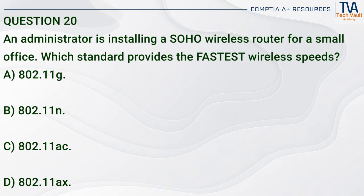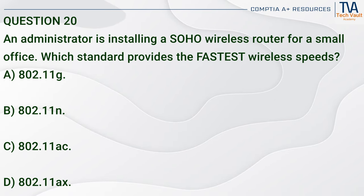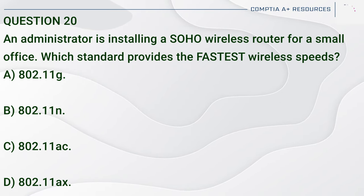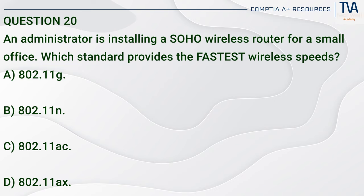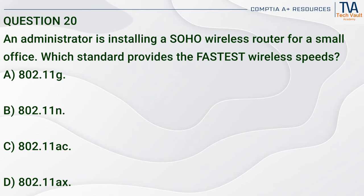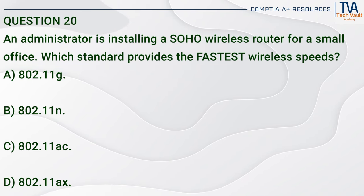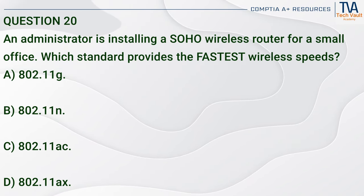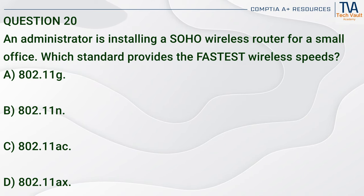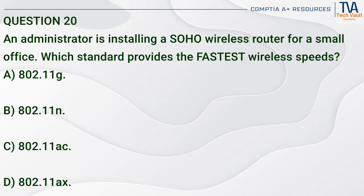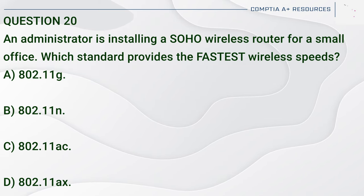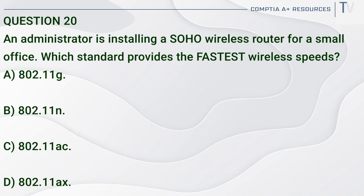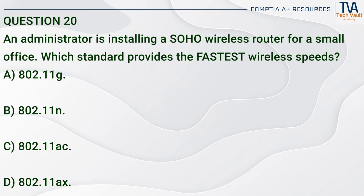Question 20. An administrator is installing a SOHO wireless router for a small office. Which standard provides the fastest wireless speeds? A. 802.11g. B. 802.11n. C. 802.11ac. D. 802.11ax.